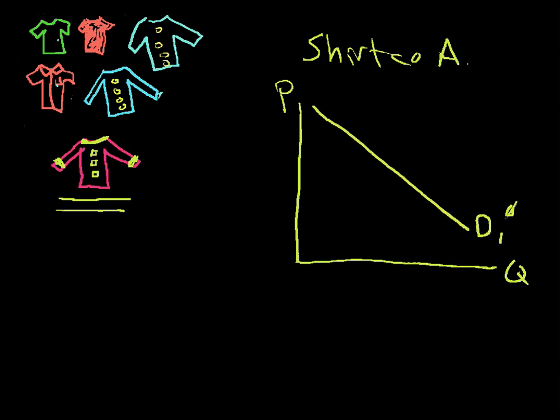Let's say this is the demand curve associated with zero economic profits. Well, what's happened is this is the condition when these are the shirts available. And this is not good for shirt company A. They would like a lot more profits.